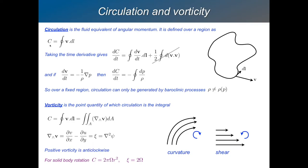You can define the circulation around a region of fluid. It is the integral, as you go around a path, of the component of the flow which is parallel to that path. So it is the integral around the circuit of V dot dl. That is the definition of the circulation.